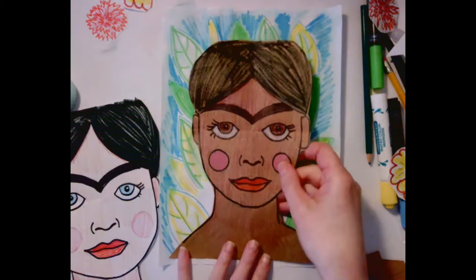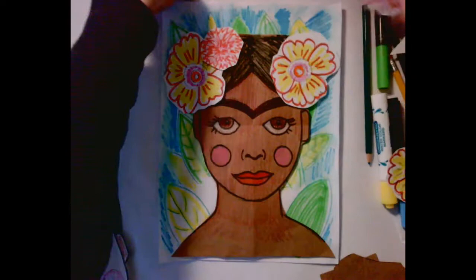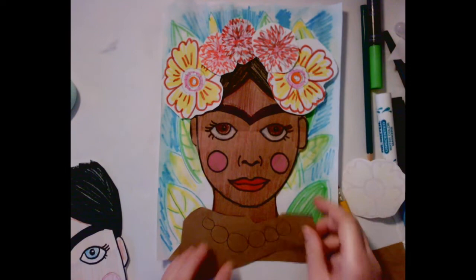I have cut out the two faces. Now remember, you're only making one face, so you can choose either or. And you're going to start to arrange it on the background. You can arrange the flowers in different ways, and you can make jewelry. So put a little scrap piece of paper over her neck and kind of line it up.